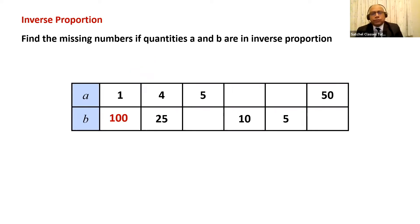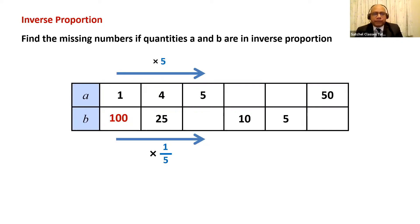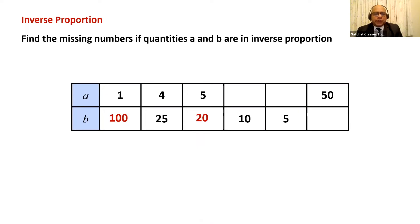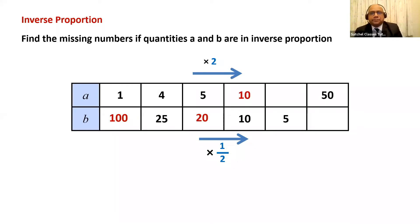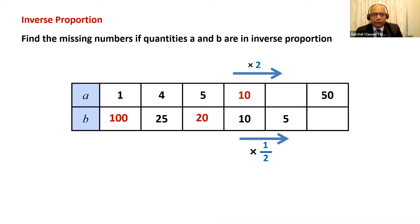Comparing the first and third columns: value of A has become five times, from 1 to 5. Because these are in inverse proportion, B will be multiplied by one-fifth. So 100 times one-fifth is 20. Now comparing the third and fourth columns: B has gone from 20 to 10, so B is multiplied by half. Therefore A will be multiplied by two — reciprocal. Five times two is 10. Comparing the fourth and fifth columns: B has again become half, from 10 to 5, so A will be doubled. 10 times 2 is 20.